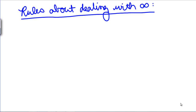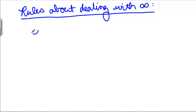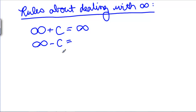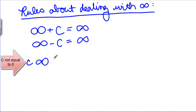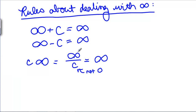Rules about dealing with infinity. Infinity is not a number and we can't really treat it like one, but there are some things we can say about it. If you take infinity and add a number to it, you're taking the biggest thing possible and making it even bigger — it's still going to be infinity. Same thing if you subtract a regular number: it just doesn't compete with infinity, you still get infinity. If you multiply or divide infinity by any number (as long as you're not dividing by zero), that's still infinity. The problem comes when we start combining multiple infinities, or combining infinity and zero.